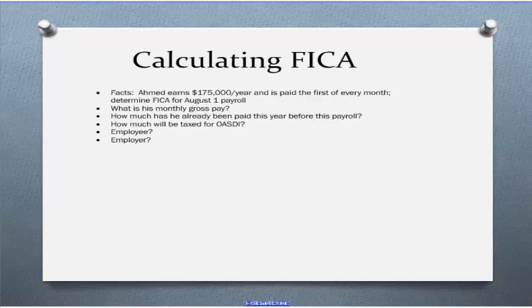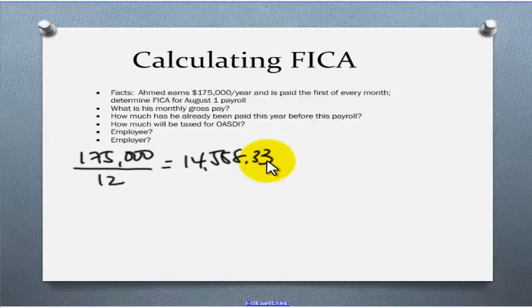Ahmed earns $175,000 a year and is paid the first of every month. Determine FICA for the August 1st payroll. How many pay periods has he been paid so far? January through July, so seven pay periods so far. Now, he's about to get his eighth pay period. What's his monthly gross pay? We take his annual pay and he's paid monthly. How many pay periods are in a year? 12. So, $175,000 divided by 12 gives me $14,583.33. How much has he already been paid this year before this payroll? We take that number and multiply it by the seven pay periods he's already had, which gives us $102,083.31.